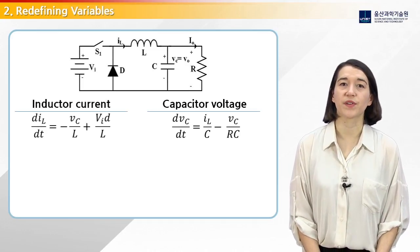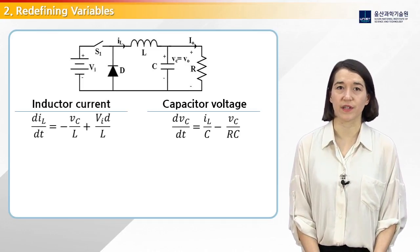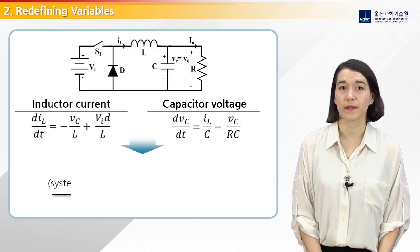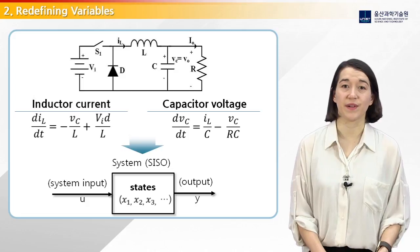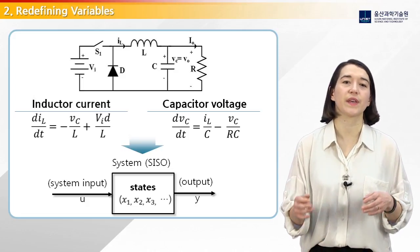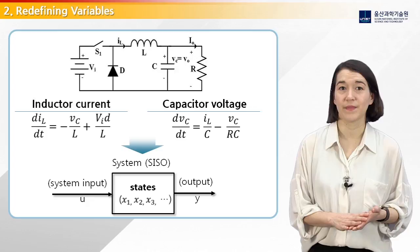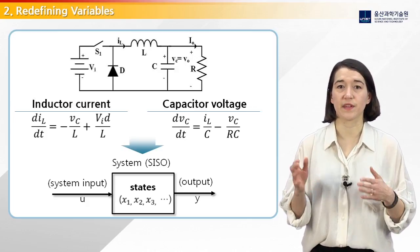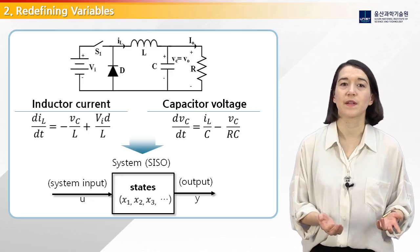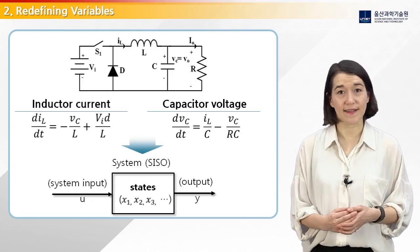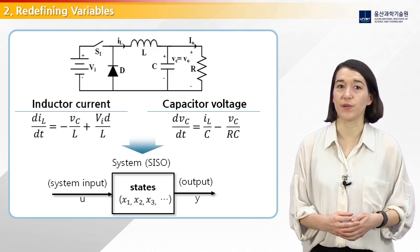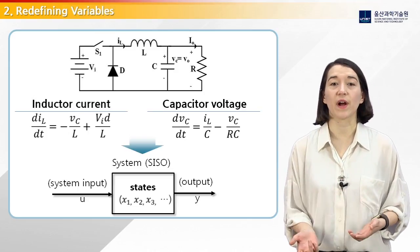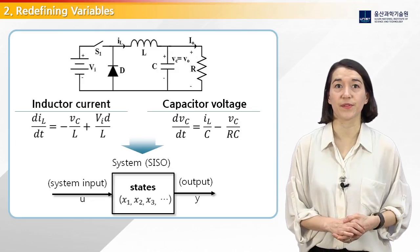We start with our two dynamic average equations for the buck converter that we derived previously. Now we want to try to adapt the equations to the SISO system model. In control systems, we use standard variables to represent the different model aspects. The system states are x, the input is u, and the output is y. Let's rewrite our system equation in terms of these standard variables.